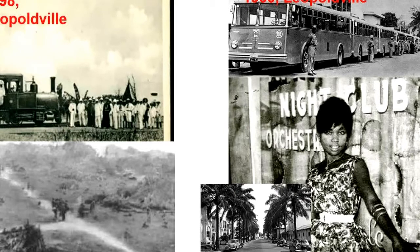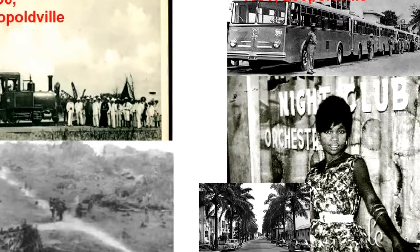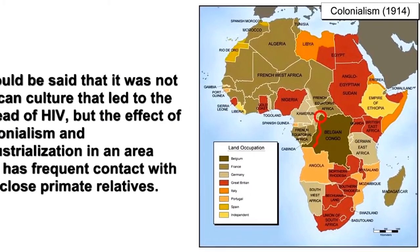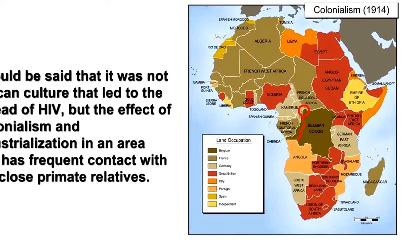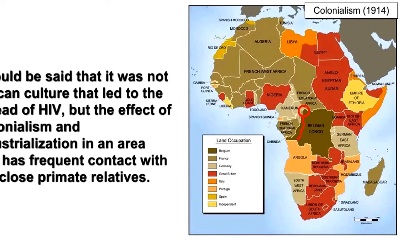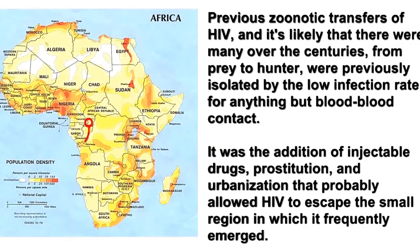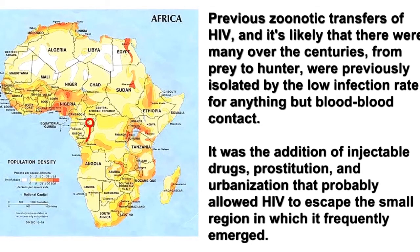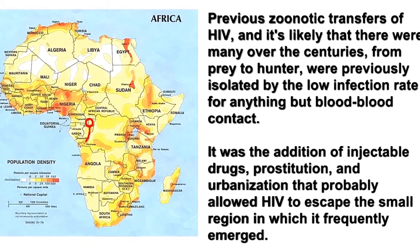People probably left their families and close communities behind, and many were no doubt lonely and isolated in this new cultural setting. It could be said that it was not African culture that led to the spread of HIV, but the effect of colonialism and industrialization in an area that had frequent contact with our close primate relatives. Previous zoonotic transfers of HIV — and it's likely that there were many over the centuries, from prey to hunter — were previously isolated by the low infection rate from anything but blood-to-blood contact. It was the addition of injectable drugs, prostitution, and urbanization that probably allowed HIV to escape the small region in which it frequently emerged.